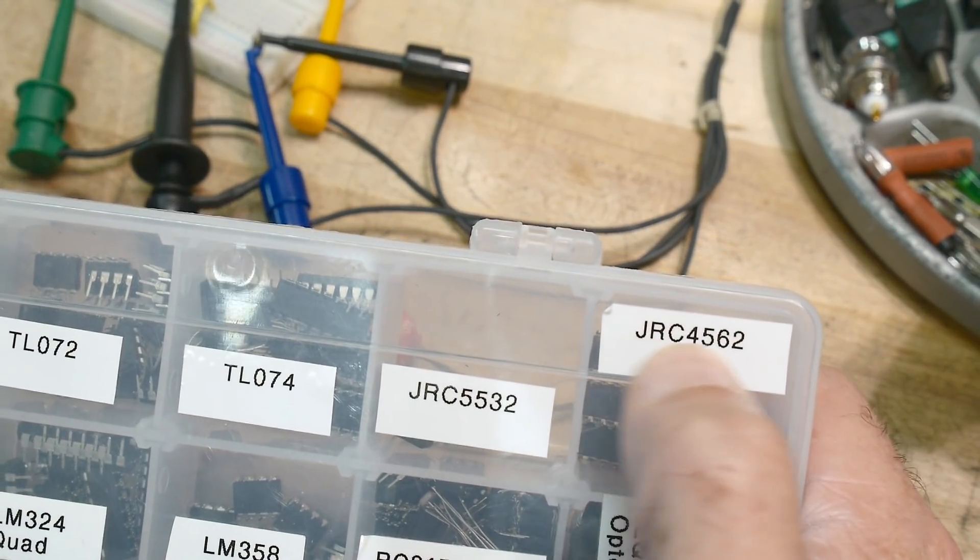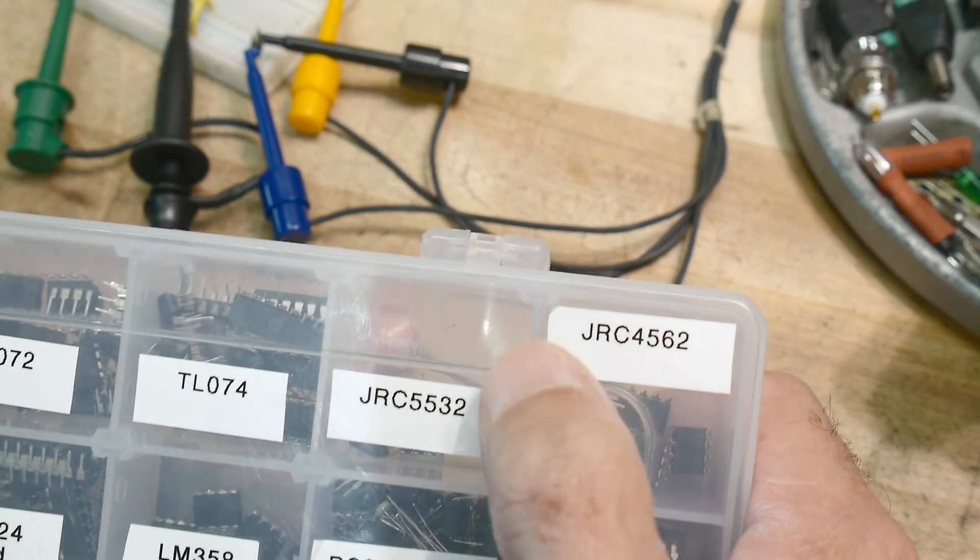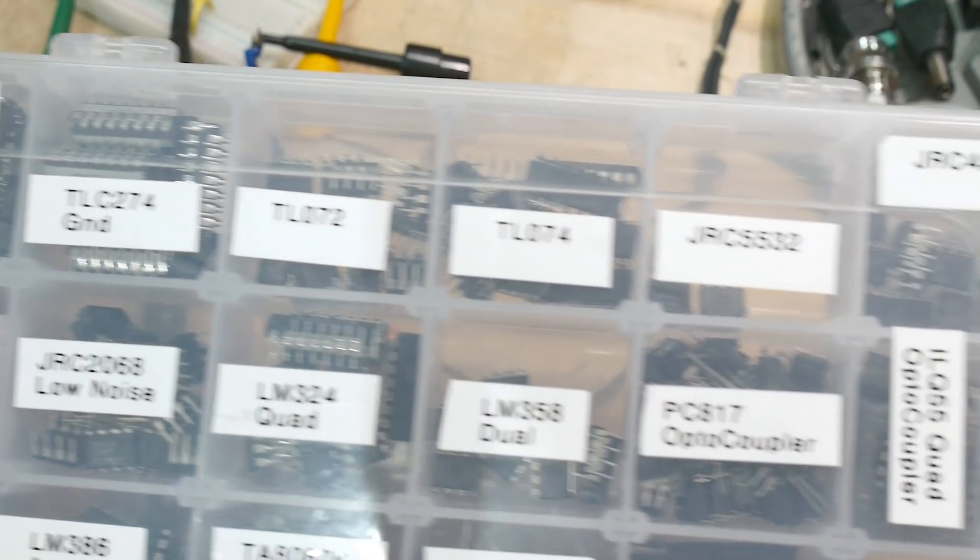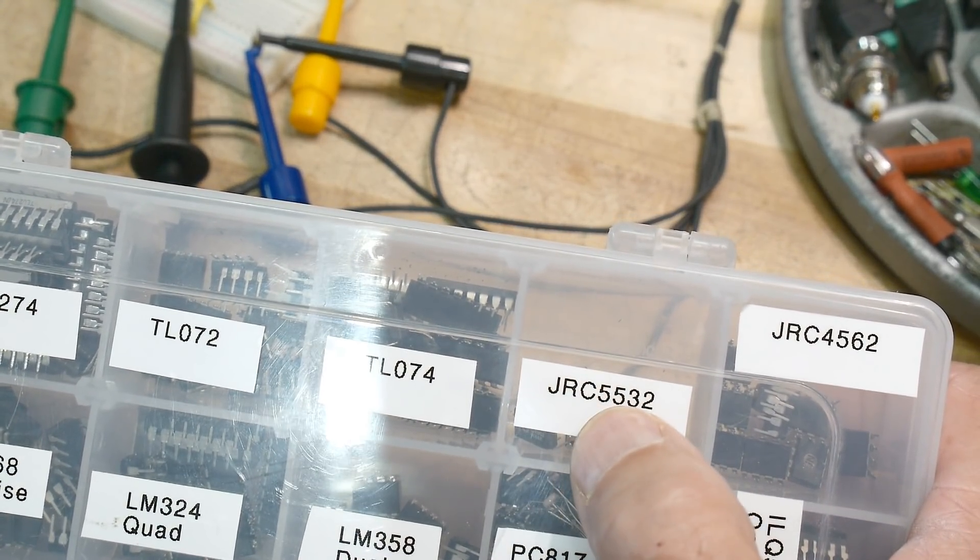I had bought a bunch of JRC op-amps in the past when I was interested in audio stuff, so I bought some low noise ones and some high current ones. Then there are the ubiquitous ones, which are the JRC 5532s.